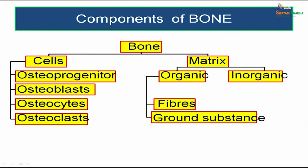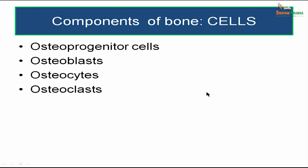Now we come to the components of bone. Bone is made up of cells and matrix. There are four types of cells: osteoprogenitor, osteoblasts, osteocytes, and osteoclasts. The matrix is made up of organic matter and inorganic matter. The organic part consists of fibers and ground substance. We will now talk about each of them in detail.